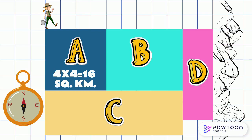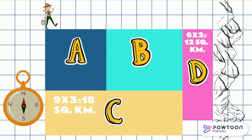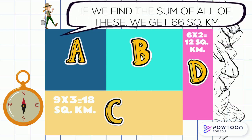Section A: multiply 4 times 4 and get 16 square kilometers. Section B: multiply 5 times 4 and get 20 square kilometers. Section C: multiply 9 times 3 and get 18 square kilometers. And Section D: multiply 6 times 2 and get 12 square kilometers. If we find the sum of all of these, we get 66 square kilometers. That's a lot of area that those campers covered.